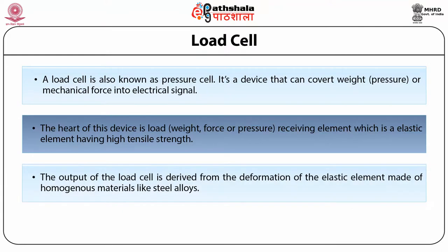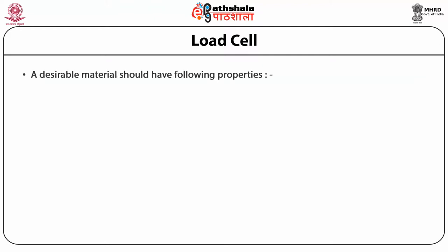The output of the load cell is derived from the deformation of the elastic element made of homogeneous material like steel alloys. One should carefully select the material and its structural configuration so that one can have a linear relationship between the dimensional change and the quantity that is forced under measurement. A desirable material should have the following properties.